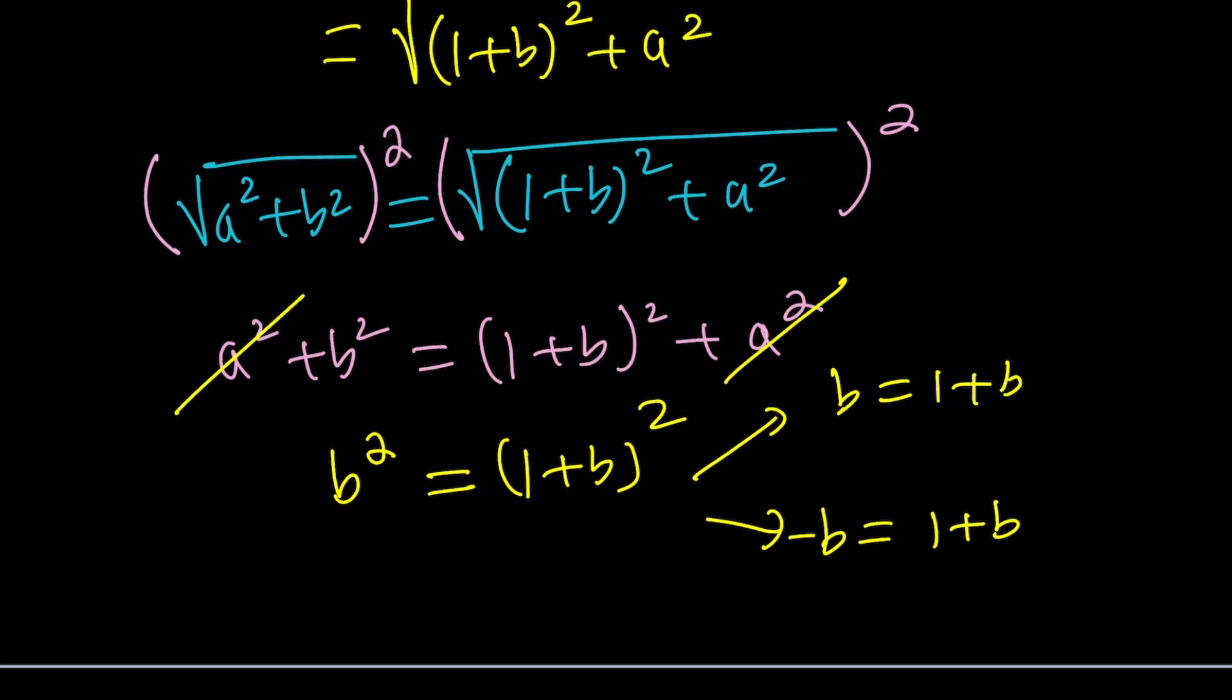Well, if you look at the first equation, B equals 1 plus B has almost no meaning, right? B cancels out and 0 equals 1. Nonsense. This is not going to work. Maybe if B approaches infinity, but we're not talking about limits here. So this is the only equation we end up with.